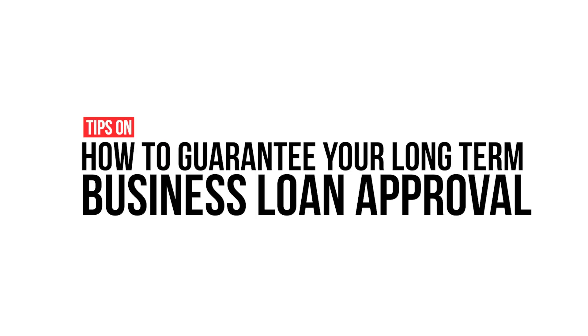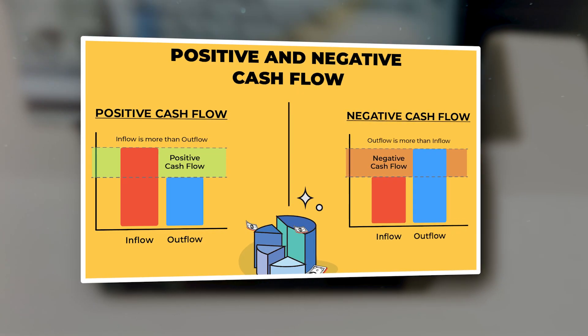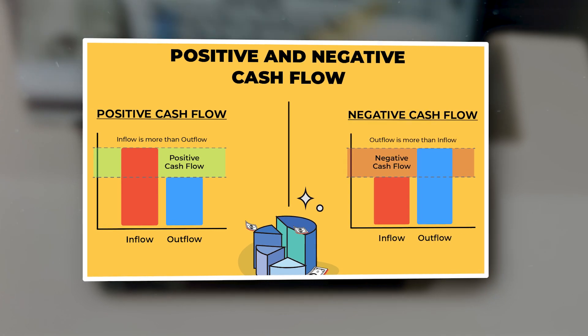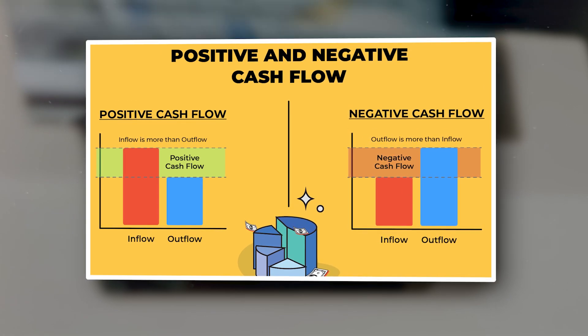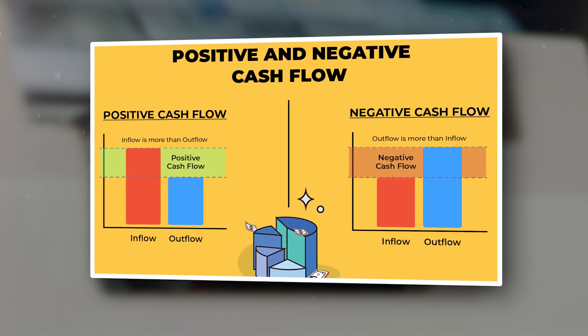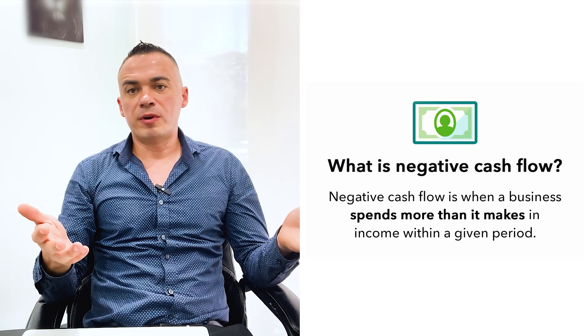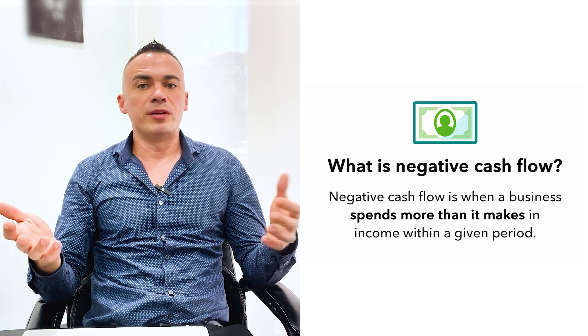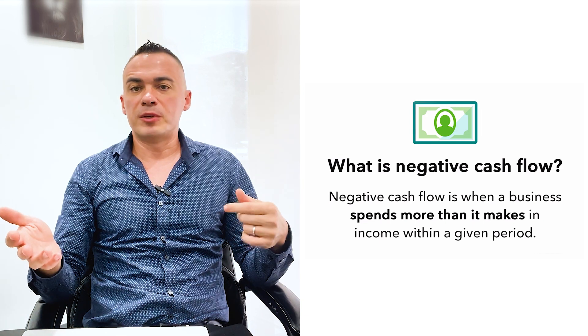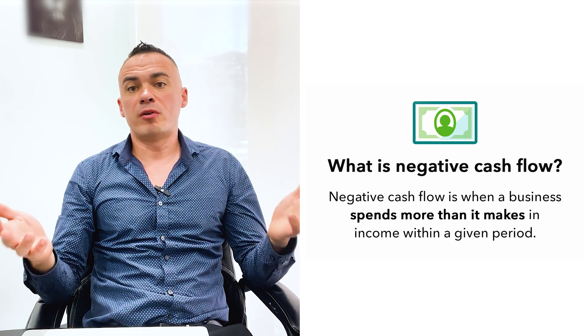Tips on how to guarantee your long-term business loan approval: how to fix negative cash flow issues. My name is Tim Shore, senior underwriter with First Union Lending. Negative cash flow arises when the business's outgoing cash surpasses the incoming cash during a specific period. This financial scenario indicates that the company is spending more money than it is generating.